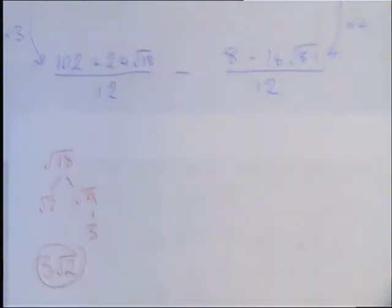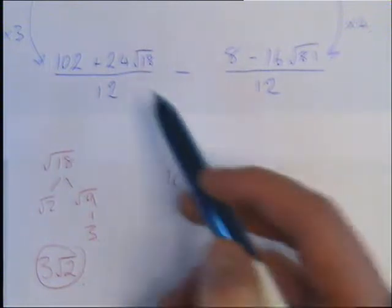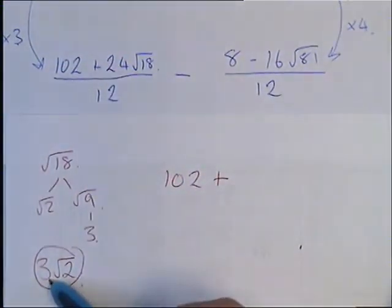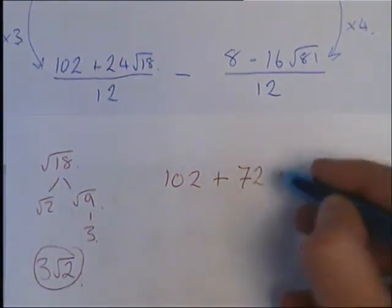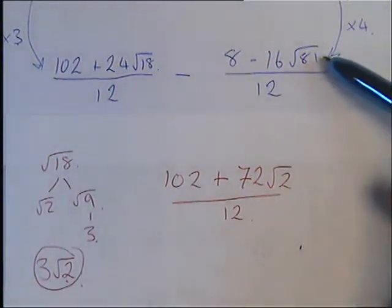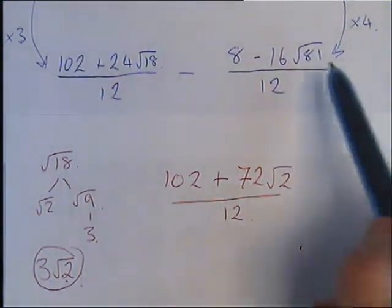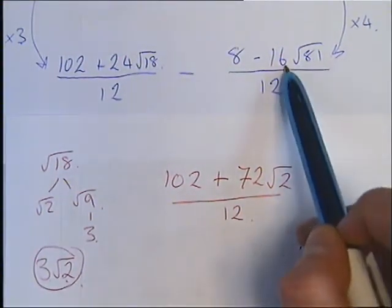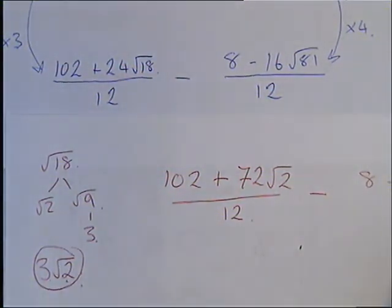So that is going to give us 102 plus 24 times our 3, which will give us 72, and then root 2 from there, all over 12 still. And then we're going to simplify down our root 81, which we should know is just 9. So all we're essentially going to do is, because root 81 is just 9, times our 16. So we're going to have take away our 8 minus 16 times 9, which we know to be 144, all over 12.